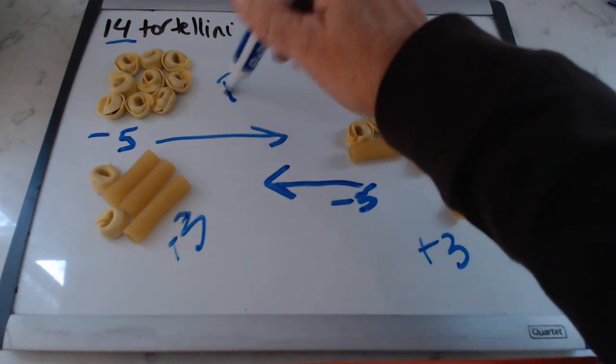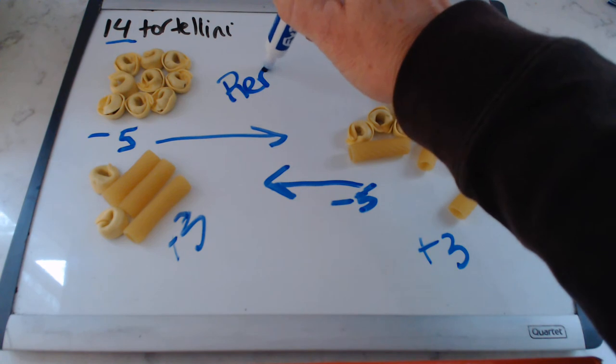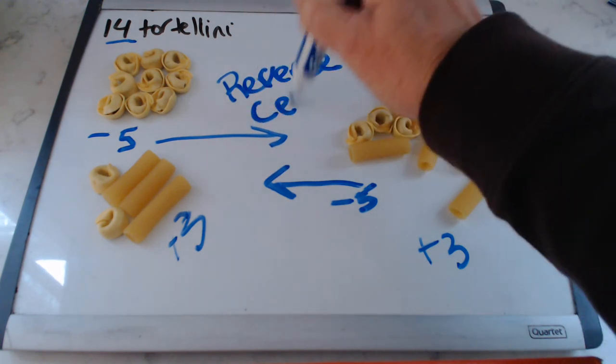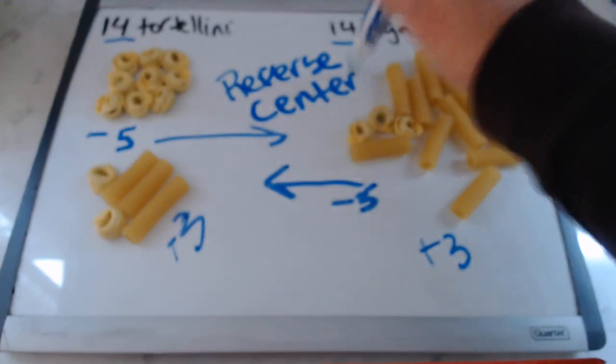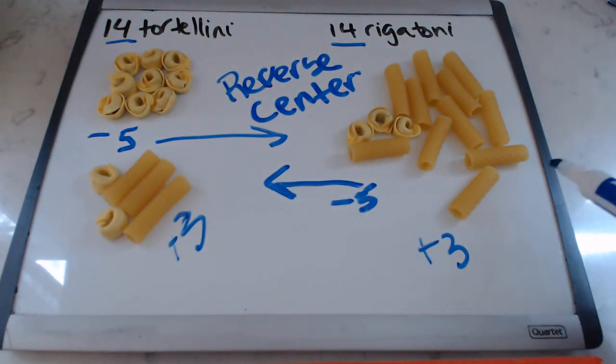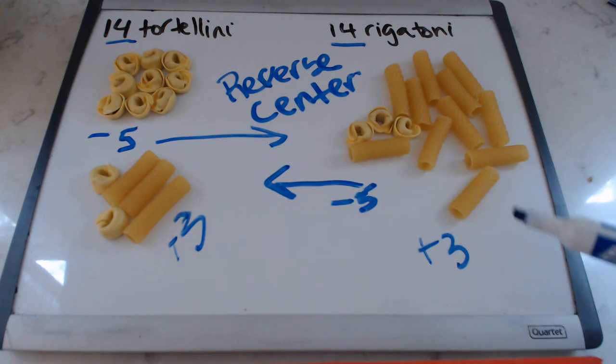So the concepts here are reversibility and centration or decentration. In other words, you're centering on the probability of getting the same number, but it's not a probability question at all. It's a simple addition and subtraction question.